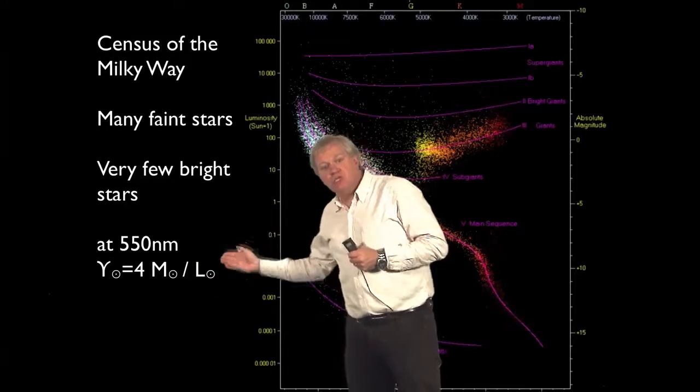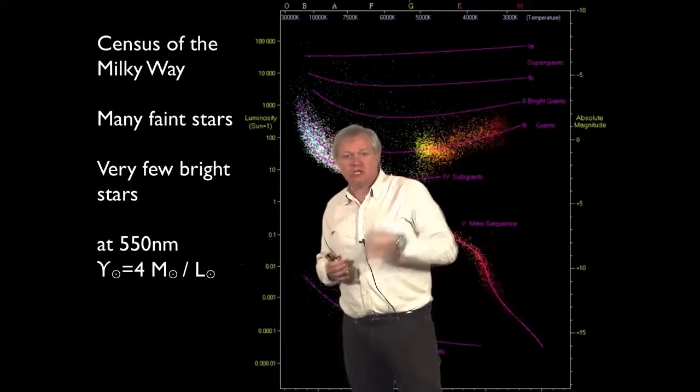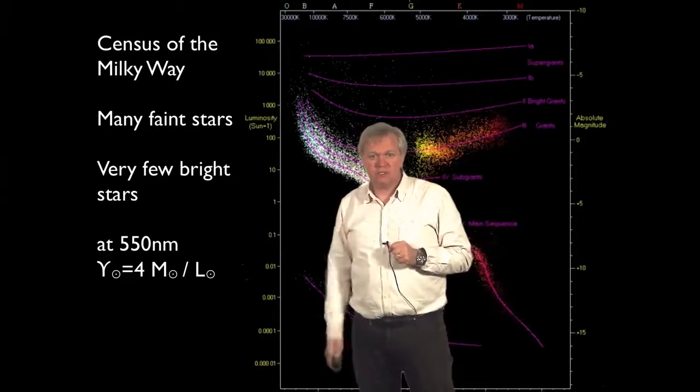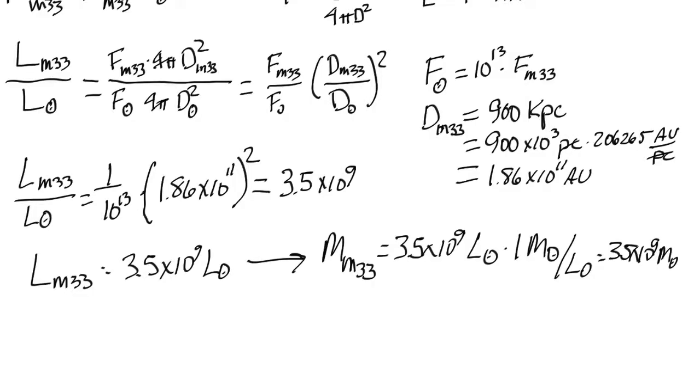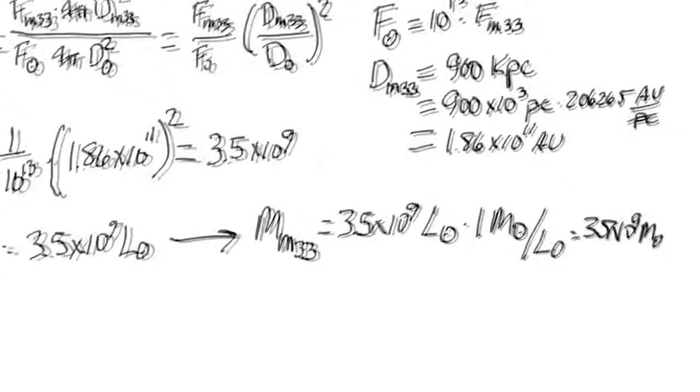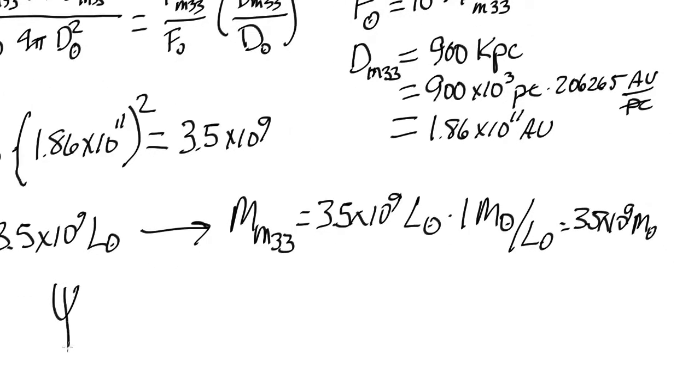So we can use this number to change the light of M33 into a mass. So our accounting told us that rather than one solar mass per solar luminosity, we can expect that the stars of the Milky Way or of any other galaxy will give the ratio of this, a mass-to-light ratio of four M solar per solar luminosity. So that allows us to get our final calculation for the mass of M33.